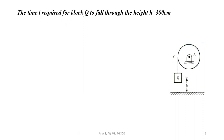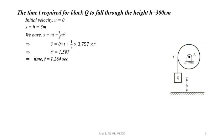Now we'll find the time T required for block Q to fall through height H equals 300 cm. Starting from rest, initial velocity u equals zero, distance s equals 3 meter. Using s equals ut plus half At squared, we get 3 equals half times 3.757 times t squared. So time t equals 1.264 seconds.